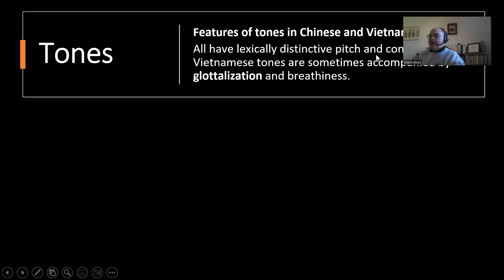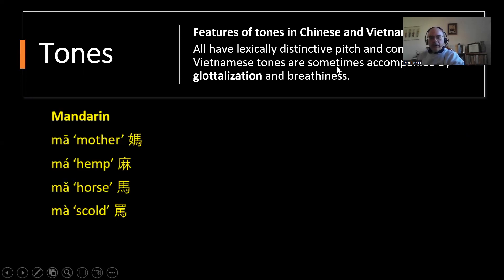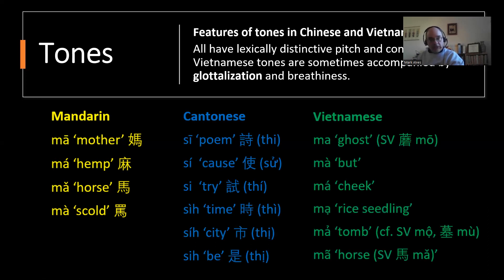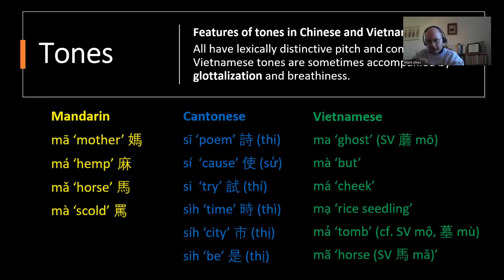In Mandarin we have the familiar four tones: mā, má, mǎ, mà. Cantonese has six basic tones for speaking purposes, though historically nine. Vietnamese also has six tones: ma, má, mà, mả, mã, mạ. Notice specifically mả and mã having what we call glottalization — some of the other tones also have a little of that. This glottalization is connected to those glottalized features from earlier in the Austro-Asiatic connection.